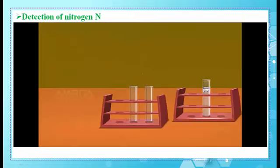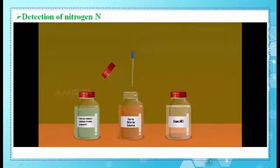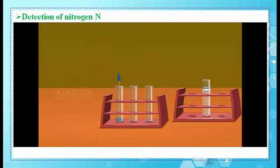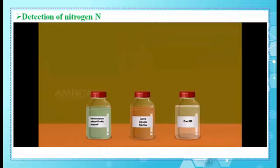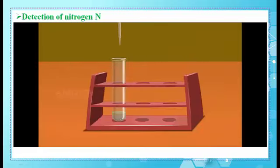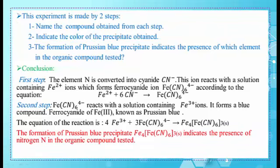Place the test tube in the test tube rack. Take a small amount of ferric chloride solution using another dropper and add it into the contents of the test tube. Using another dropper, take a small amount of concentrated hydrochloric acid and add it into the contents of the test tube. On further treating with ferric chloride and concentrated hydrochloric acid, sodium ferrocyanide forms a Prussian blue complex — ferric ferrocyanide. As seen in the video, this experiment is done in two steps: in the first step we added Fe²⁺ ions, and in the second step we added Fe³⁺ ions.